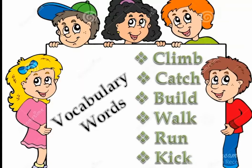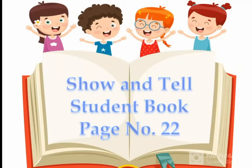Then the teacher will move forward and students will use 'I see' sentences with various objects. After this, the teacher will show vocabulary action words one by one and students will perform each action — for example, when the teacher says 'climb', students will do the climbing action.